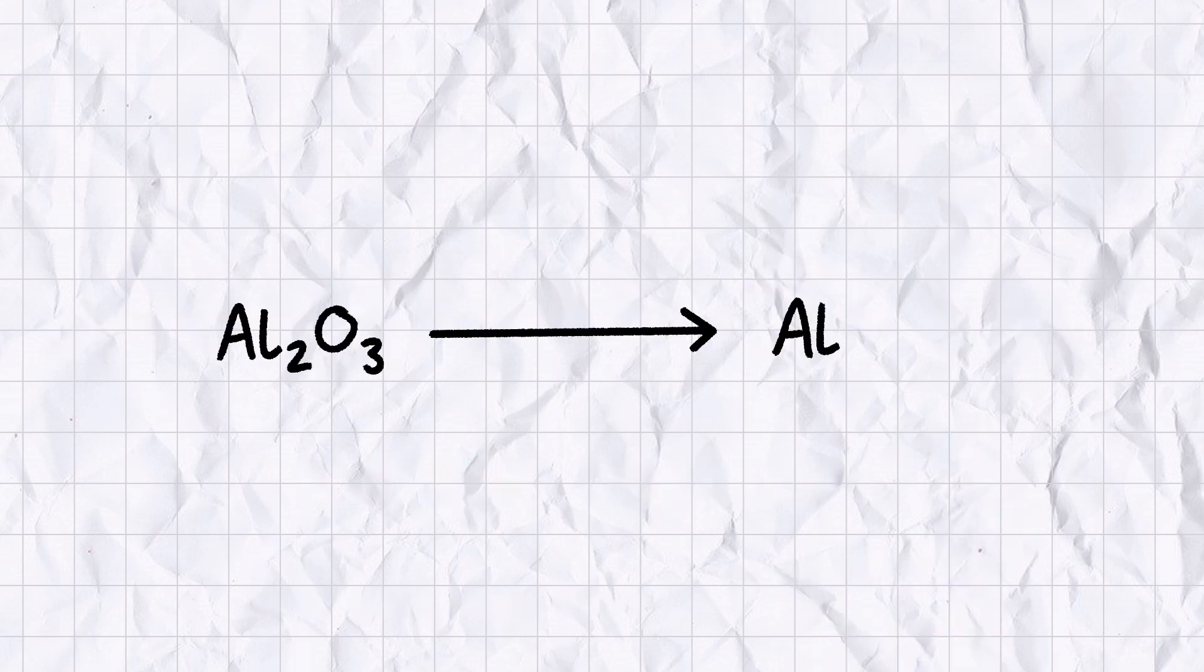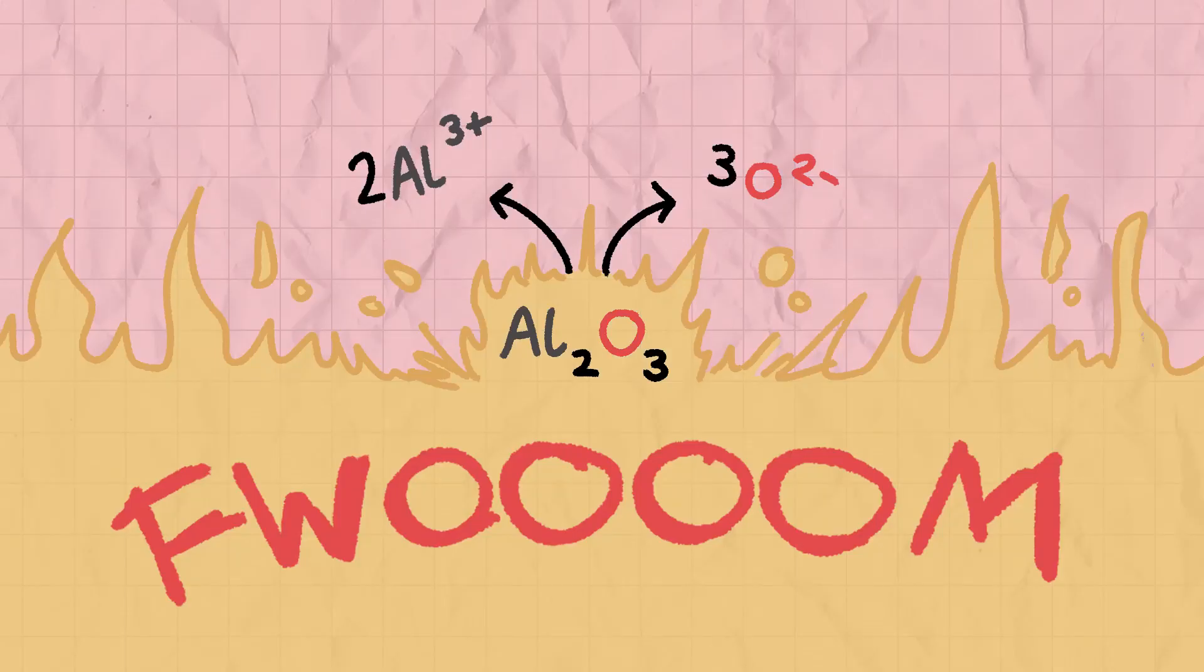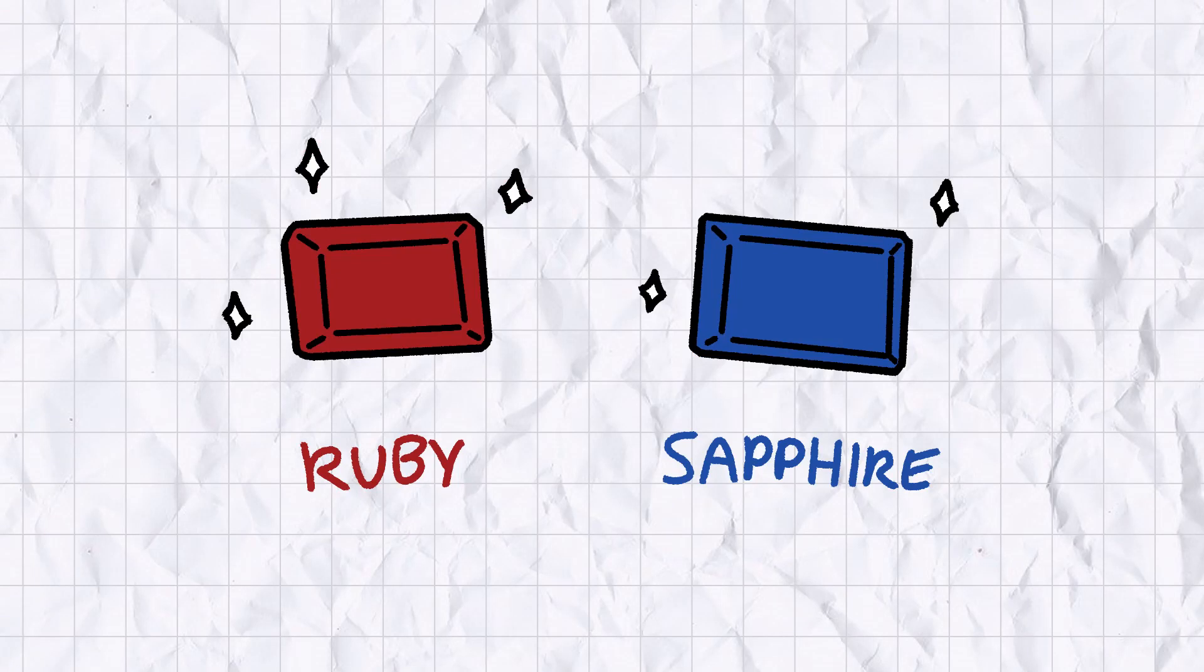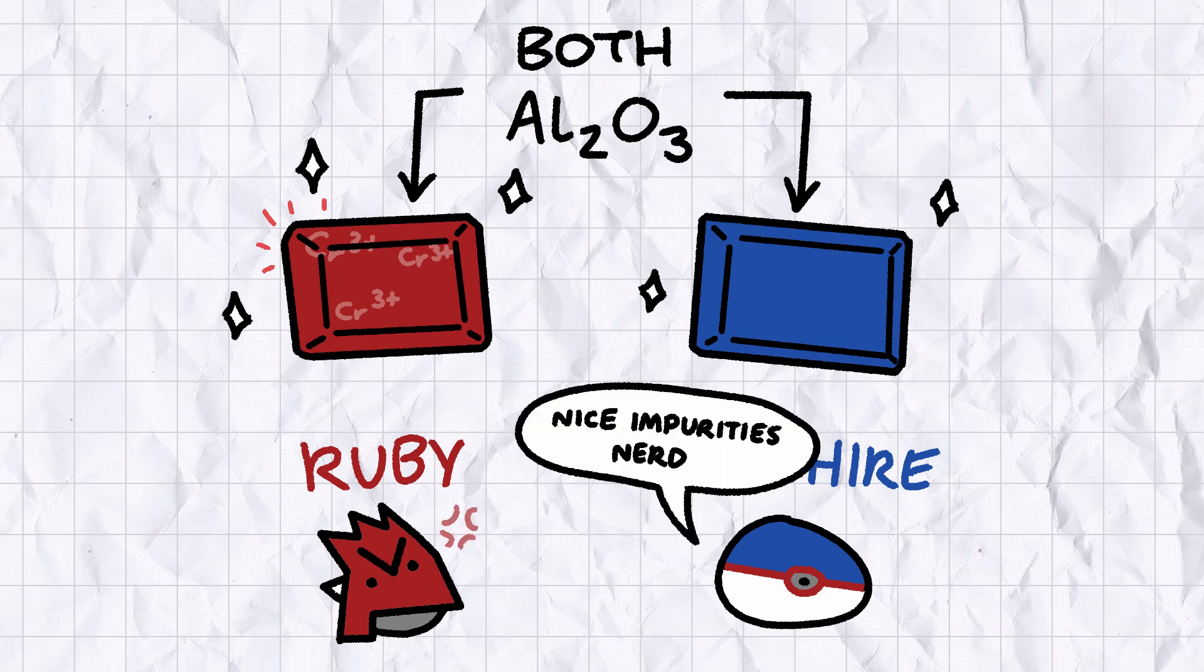While bauxite was relatively common, making the pure metal was another story. Aluminium atoms form incredibly strong bonds with oxygen, and breaking those bonds requires enormous amounts of energy. The reason that gemstones like rubies and sapphires are so strong and resistant to heat is because they're primarily made out of aluminium oxide. The only difference is that rubies contain a tiny percentage of chromium ions, an impurity that gives the gemstone its distinctive red colour.